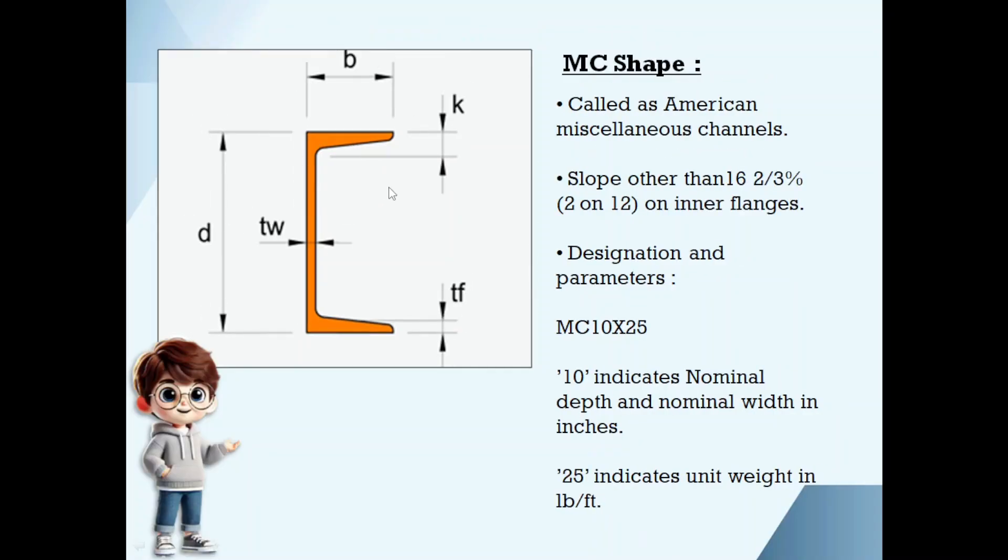MC shape. These are called as American miscellaneous channels. For this, slope of inner flange surface is not equal to 2 on 12. Designation parameters are same. MC 10 by 25 if you take, 10 is the nominal depth and 25 is the unit weight.